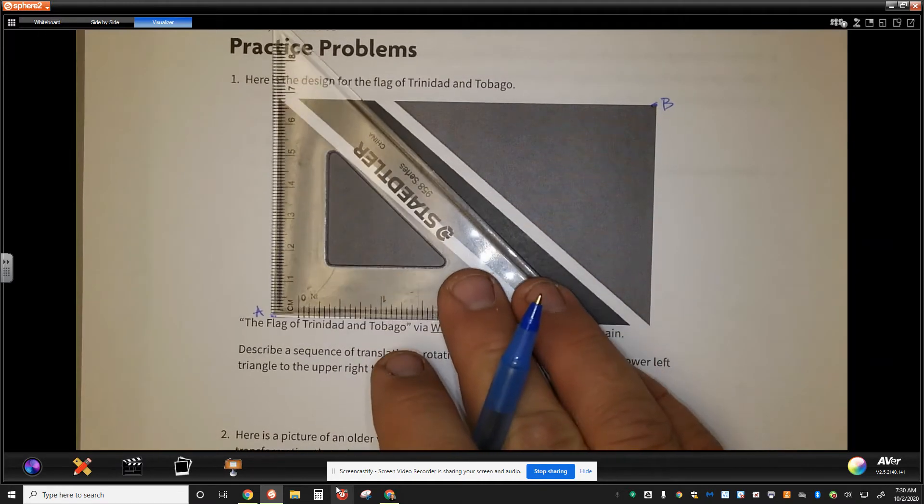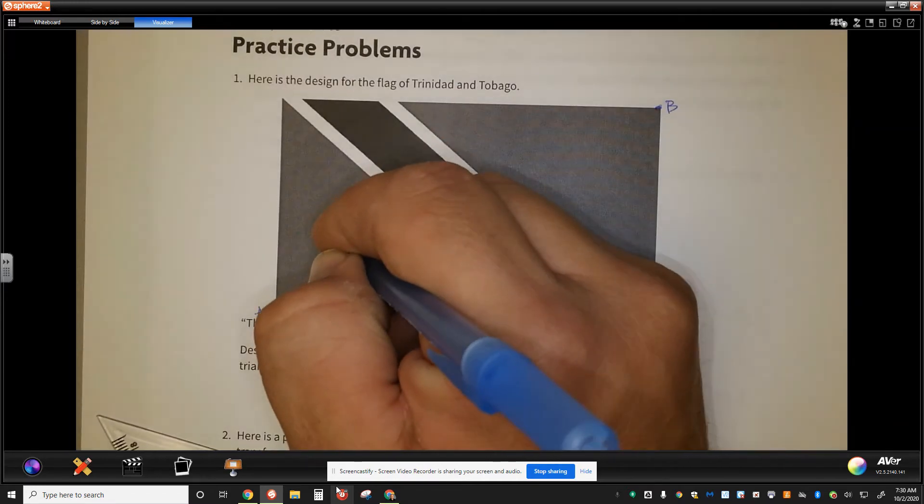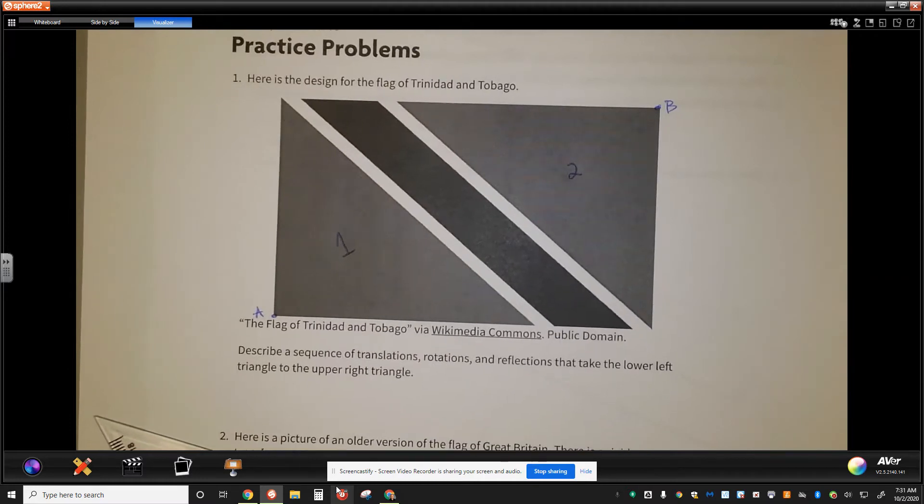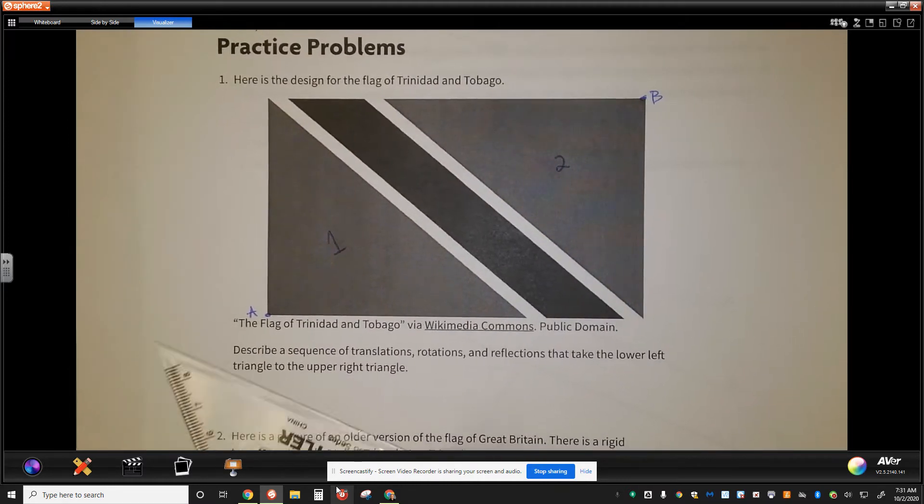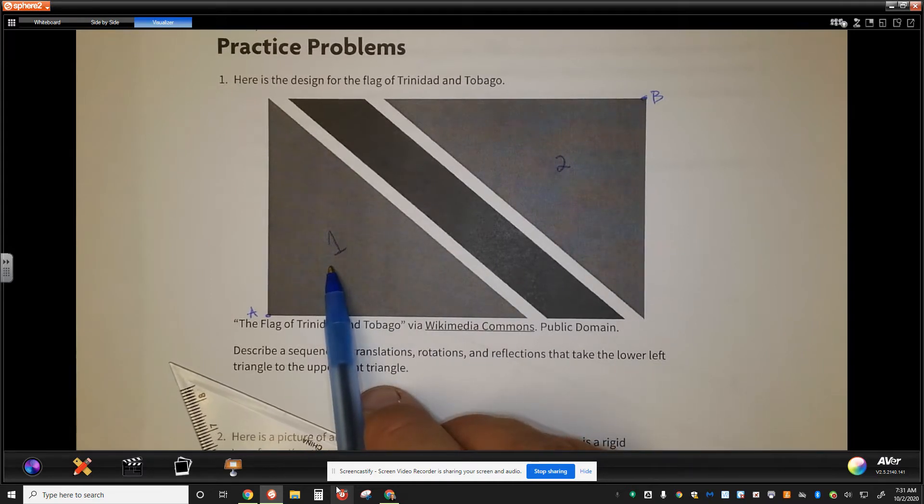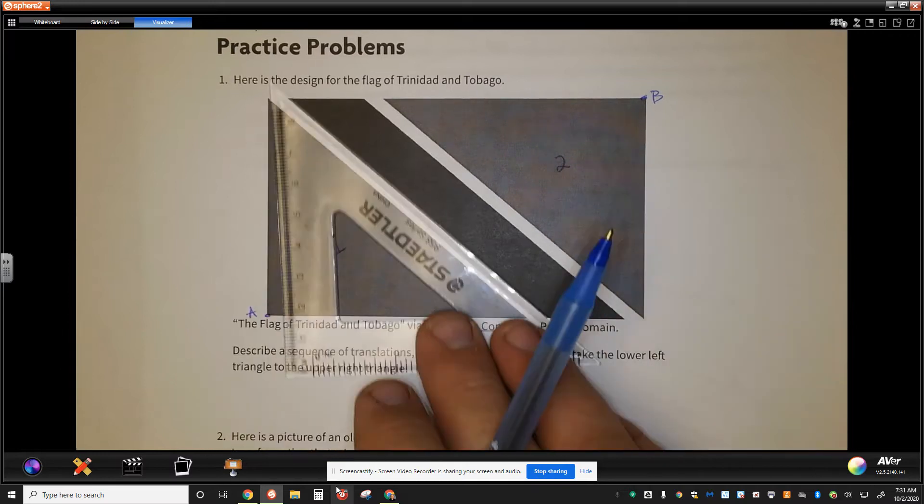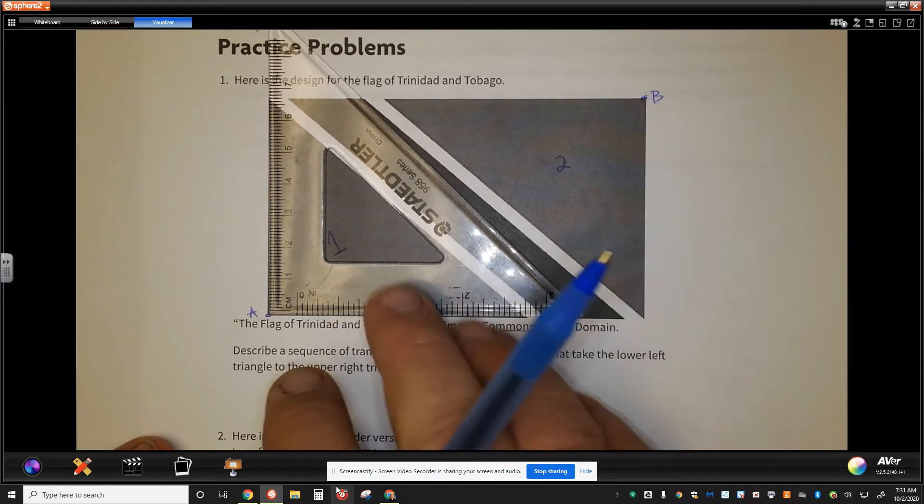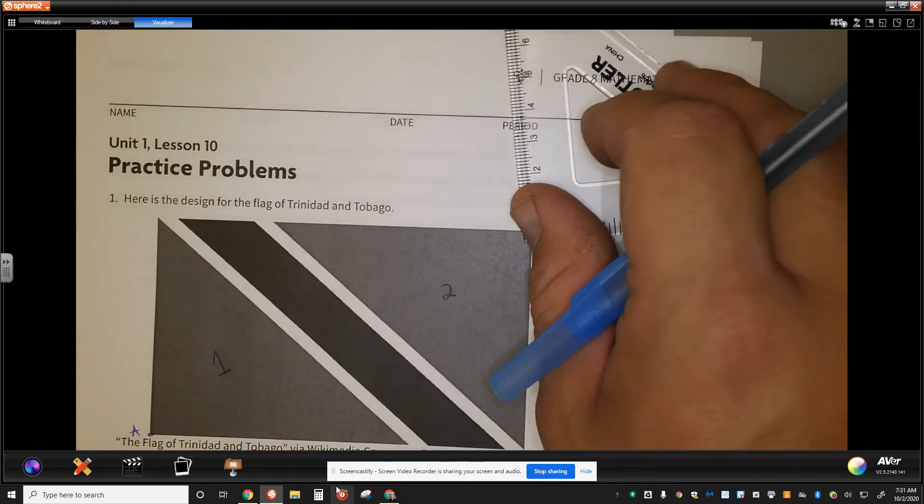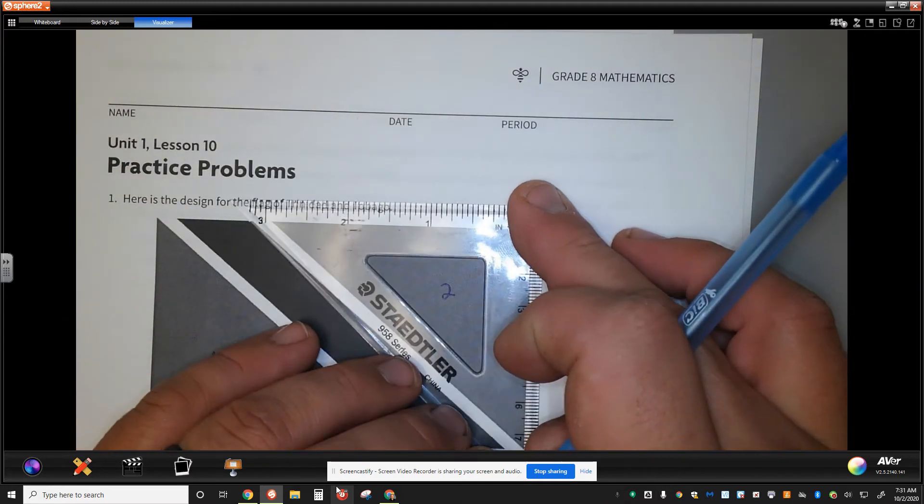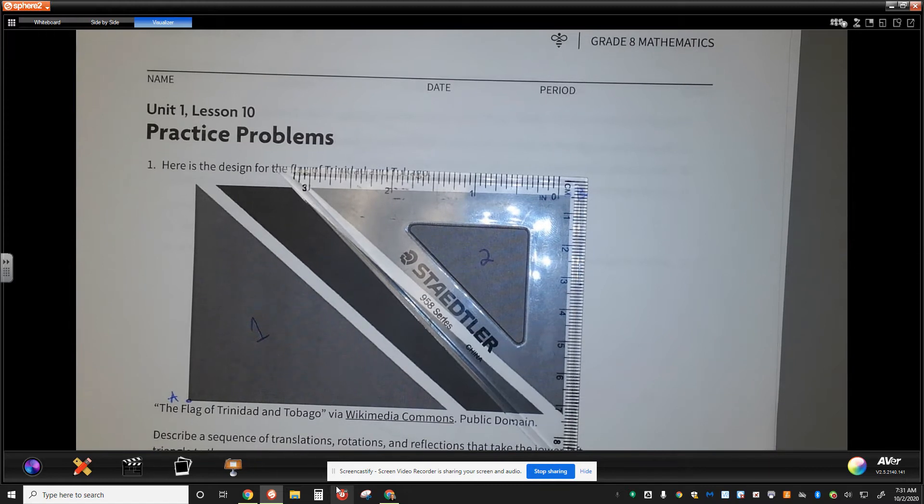I'm going to just look at this triangle, and I'm going to translate it. I'll call this one triangle 1 and this one triangle 2, just for the purposes of being able to write my description. So we're going to say, let the lower left triangle be triangle 1, let the upper right triangle be triangle 2. Translate triangle 1 from A to B, and then rotate the triangle 180 degrees around center B to create triangle number 2.